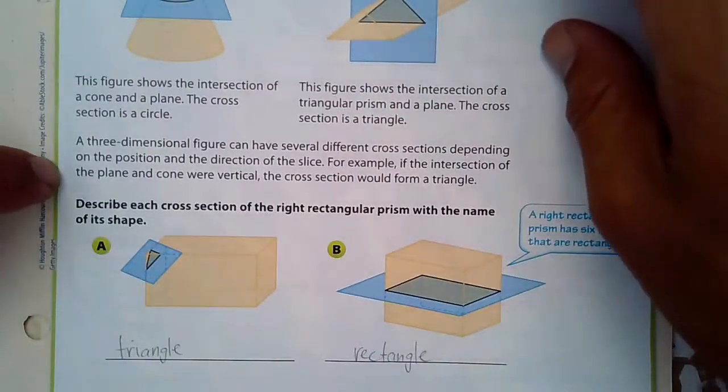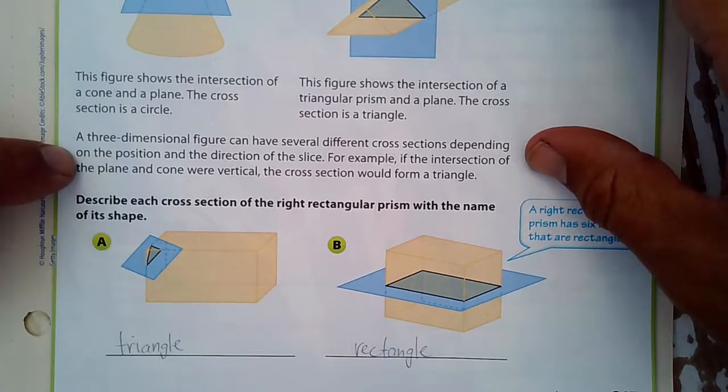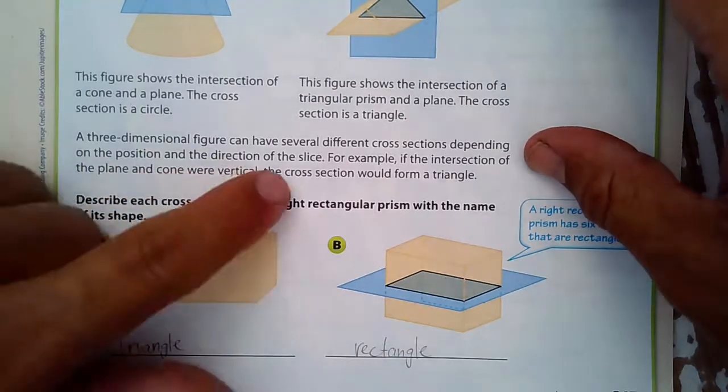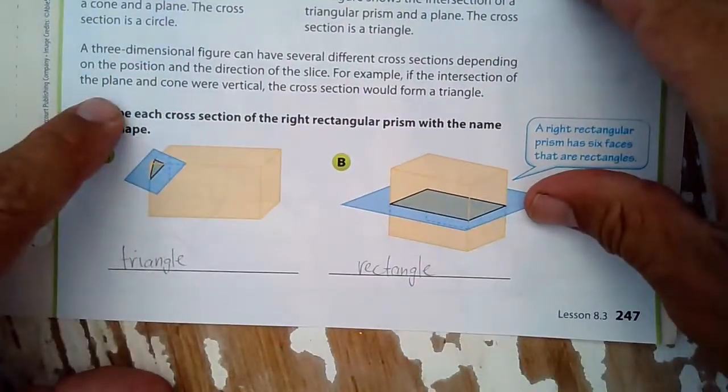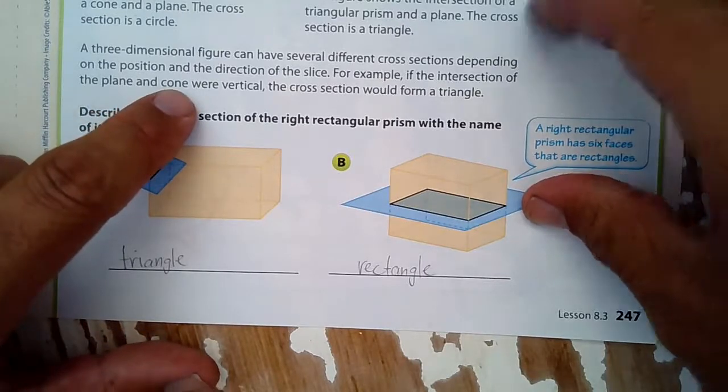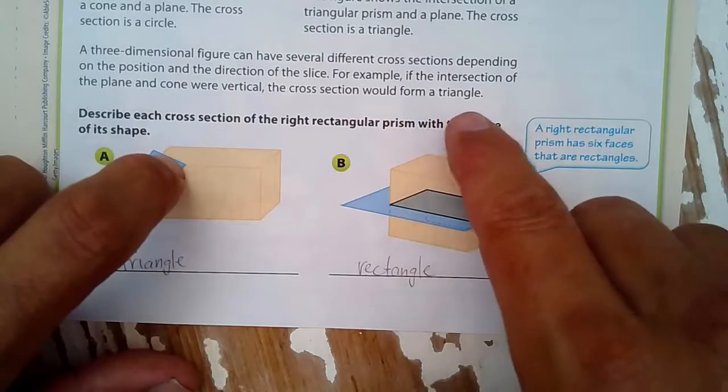Imagine a plane slicing through the pyramid shown, or through a cone or a prism. So the intersection here is a circle, and the intersection here is a triangle. It's highlighted in black. A three-dimensional figure can have several different cross-sections, depending on the position and the direction of the slice. And that slice is the plane.